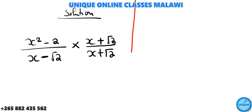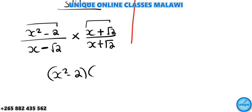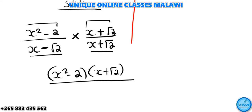Now we need to multiply. We will have two brackets — the first bracket is x squared minus 2, and the other bracket will be x plus √2. We consider these terms as conjugates. So we square the first part, minus squaring the other part, which is √2 squared.